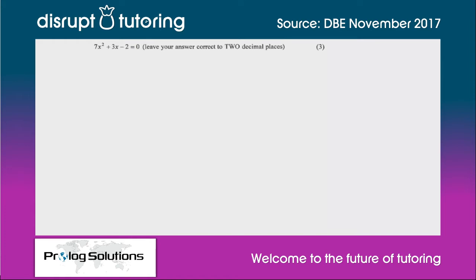This instruction is an important clue — it tells us that we cannot factorize this using our normal rules. So we should use the quadratic formula or completing the square, but I'm going to use the quadratic formula. That is: x = (-b ± √(b² - 4ac)) / 2a.